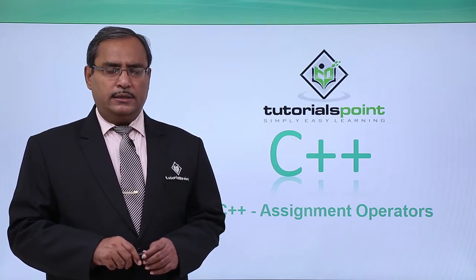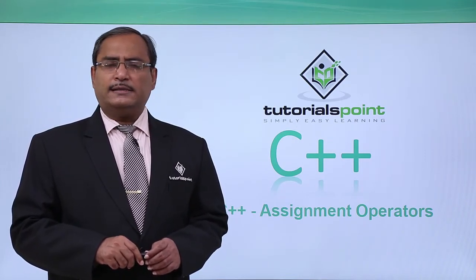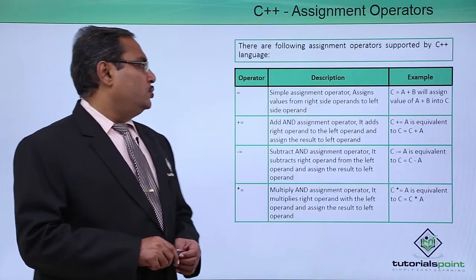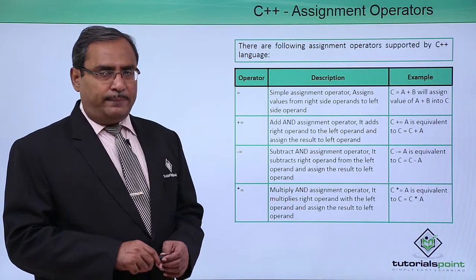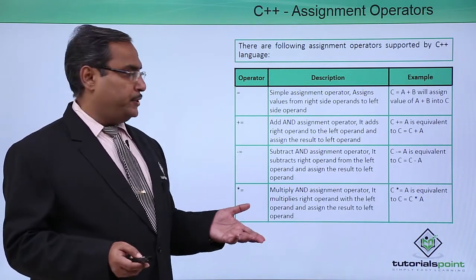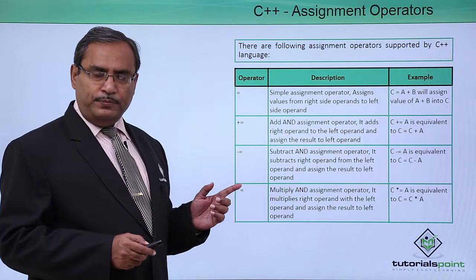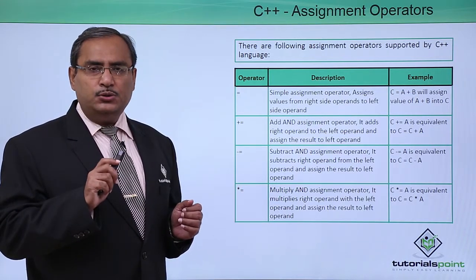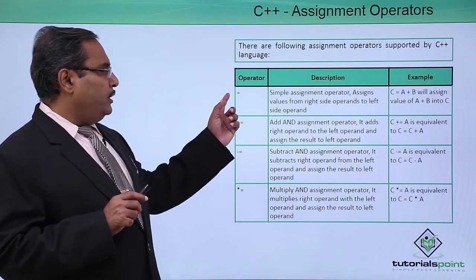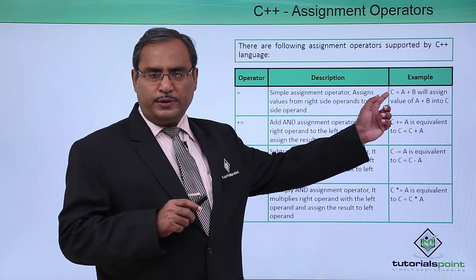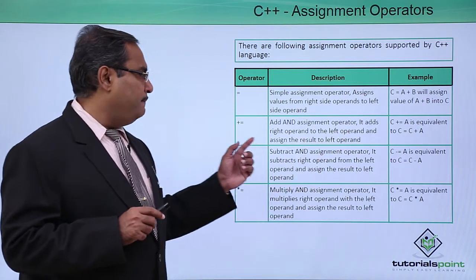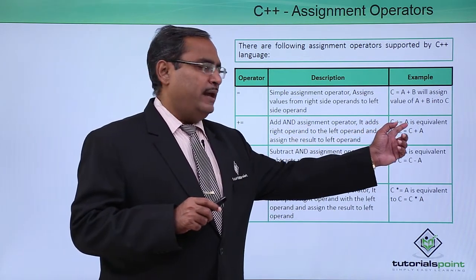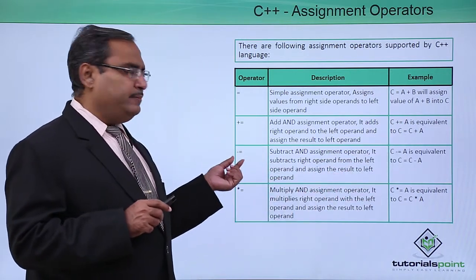C++ assignment operators — there are so many assignment operators in C++ we can access. Here is the list of them: the first one is the equal-to operator, that is the assignment operator. Then plus-equal-to: A += 10 means A is equal to A plus 10. You can use the equal-to operator as C = A, and plus-equal-to as C += A means C is equal to C plus A.